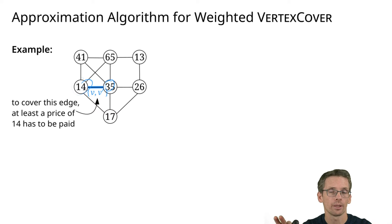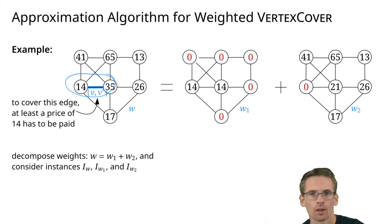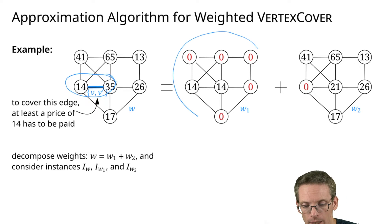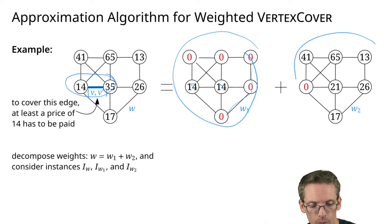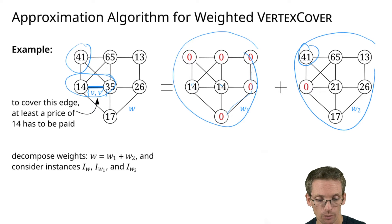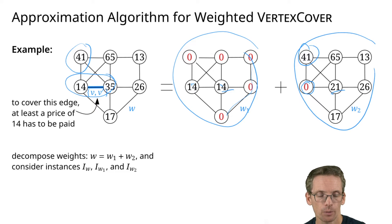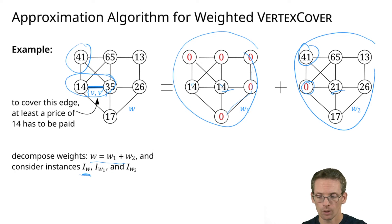We decompose the weights in the following way. We take this edge, take the smaller weight which is 14, and create one instance where we only have 14 for both endpoints of that edge and all other weights are set to zero. Then the other instance has the remaining weights: vertices not touched keep their original weight (like 41 here), the one that was 14 gets remaining weight zero, and the other gets 35 minus 14 = 21.